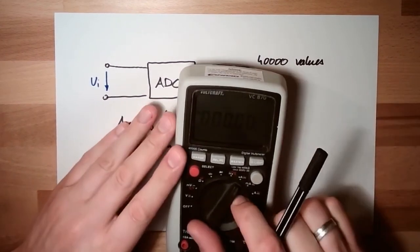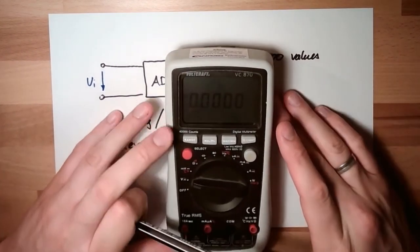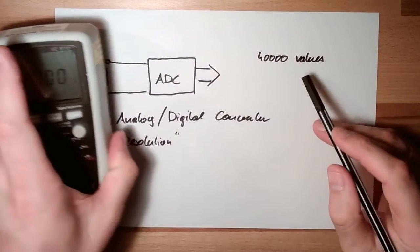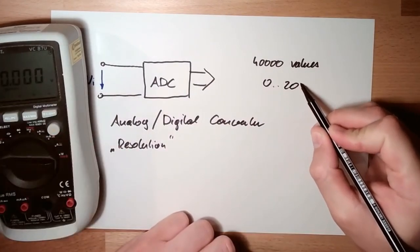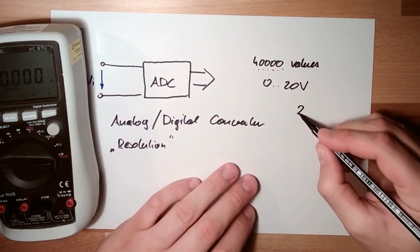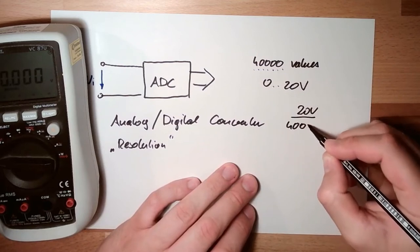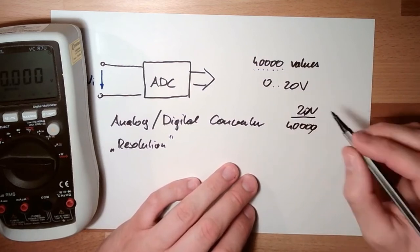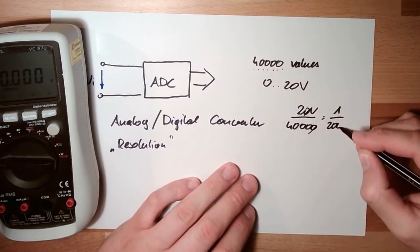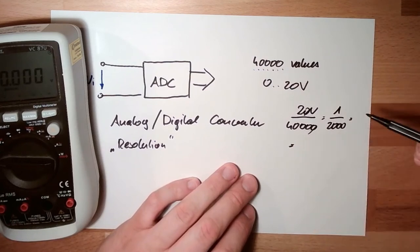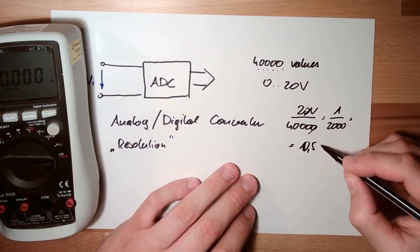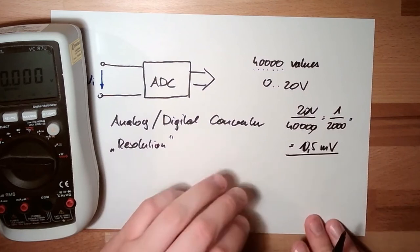If I'm measuring in the range of let's say 0 to 20 volts, I divide this in 40,000, 40,000 values. This is 20 divided by 40,000. This is one divided by 2000, this is a thousandth, is a millivolt, 0.5 millivolt. These are the steps, 0.5 millivolt.